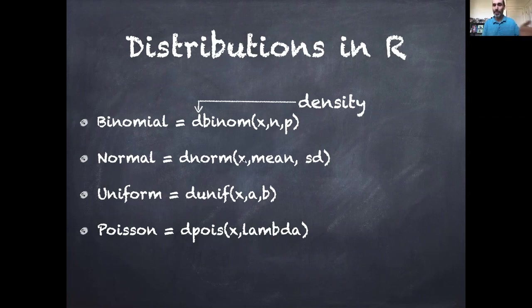For the normal distribution, if I want to calculate the probability of a specific value, I input that as x given a specific mean and standard deviation. The uniform has a lower bound a and upper bound b, and the Poisson has a rate parameter lambda.